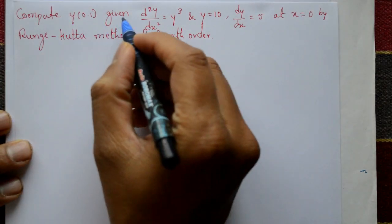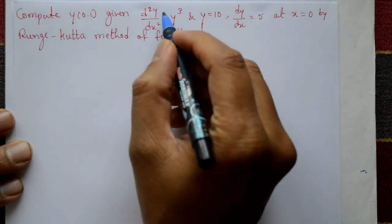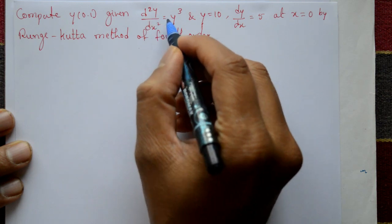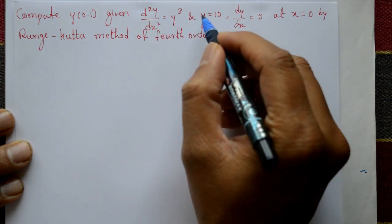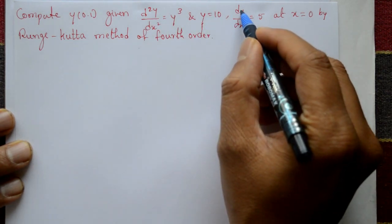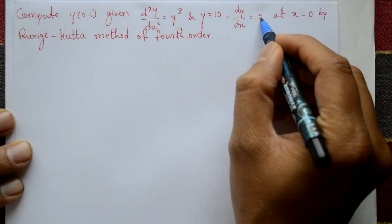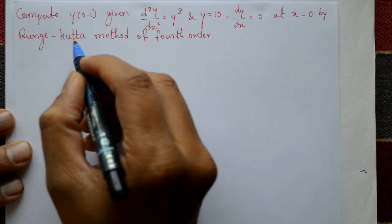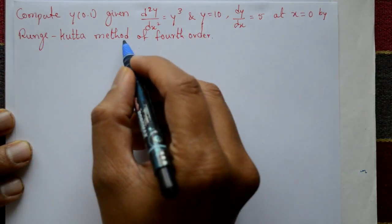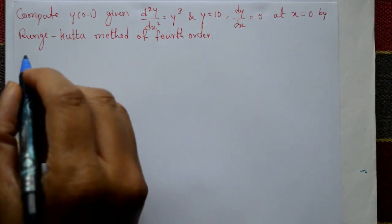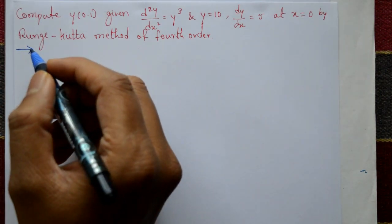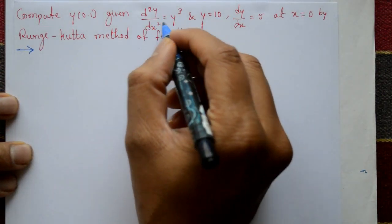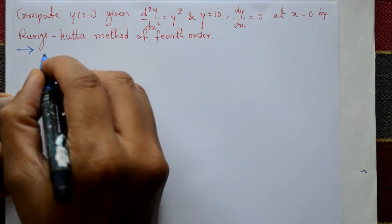Compute y(0.1) given the second-order differential equation d²y/dx² = y³, with initial conditions y = 10 and dy/dx = 5 at x = 0, using the Runge-Kutta method of fourth order. This example is very simple. First we write the second-order differential equation.